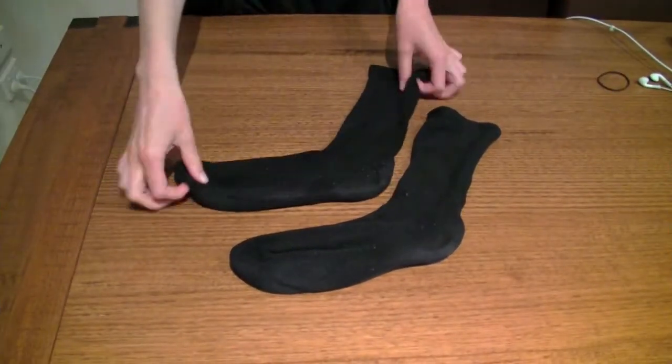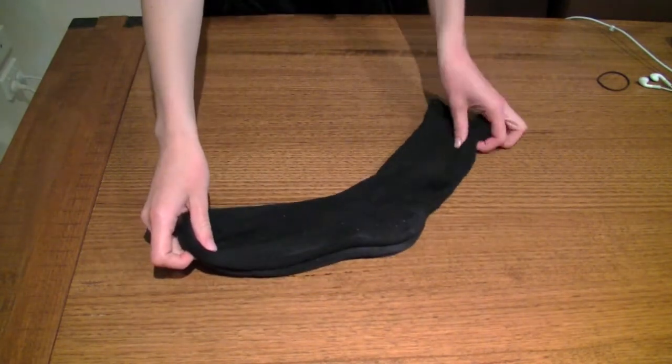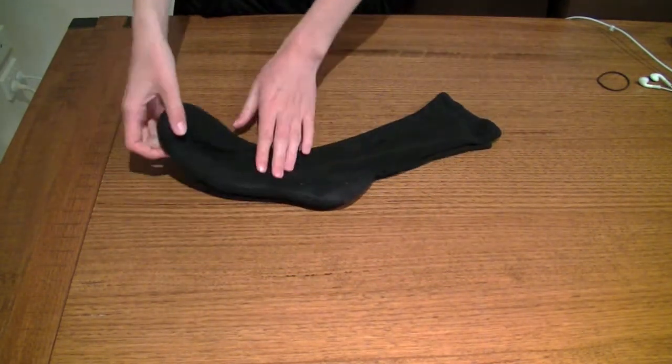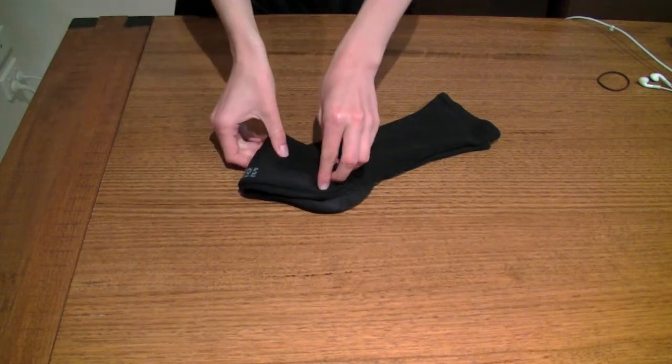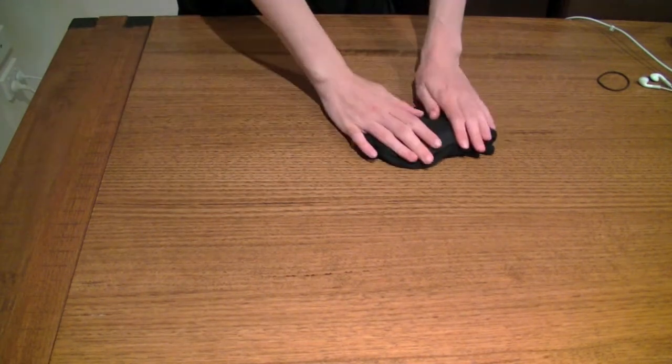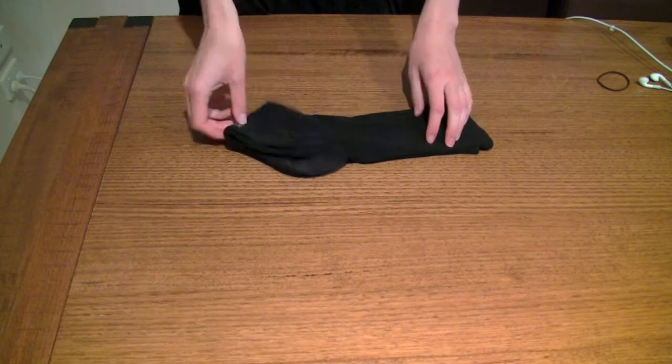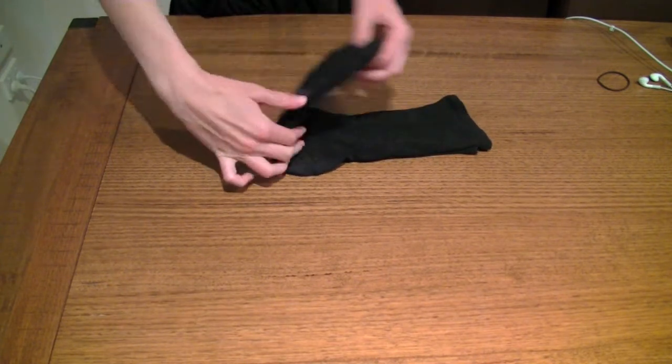For adult size socks, it's generally the same folding technique depending on the length of the sock. You simply stretch it out and you can either fold it into thirds if it is a long sock, or the same as the child size, you can fold it in half.